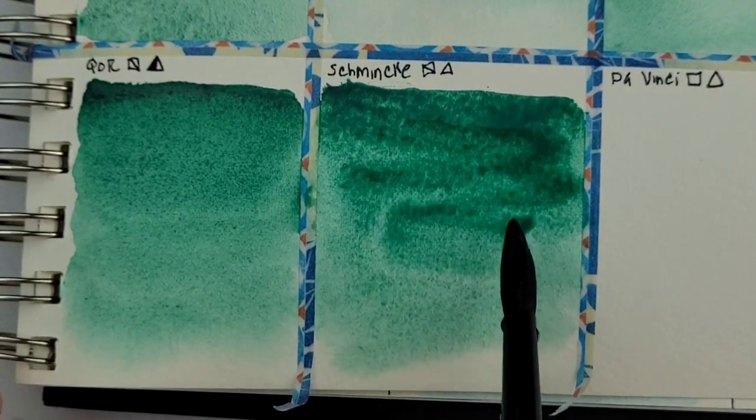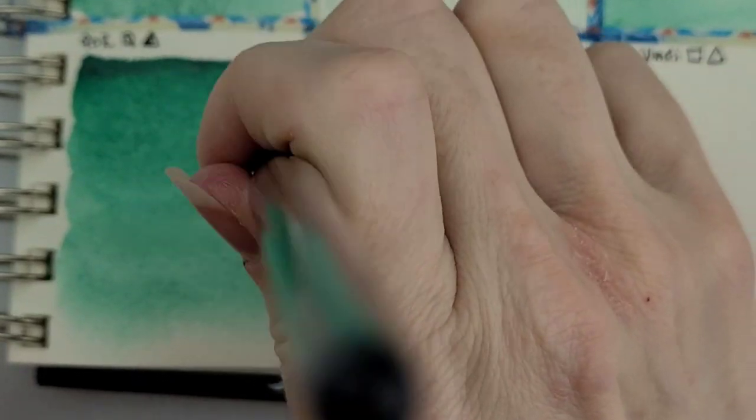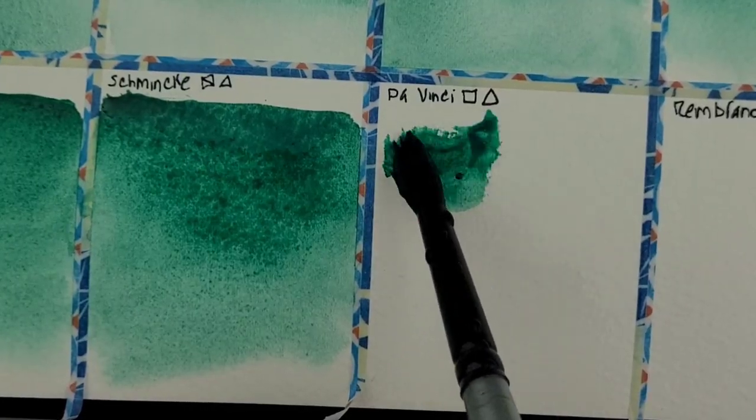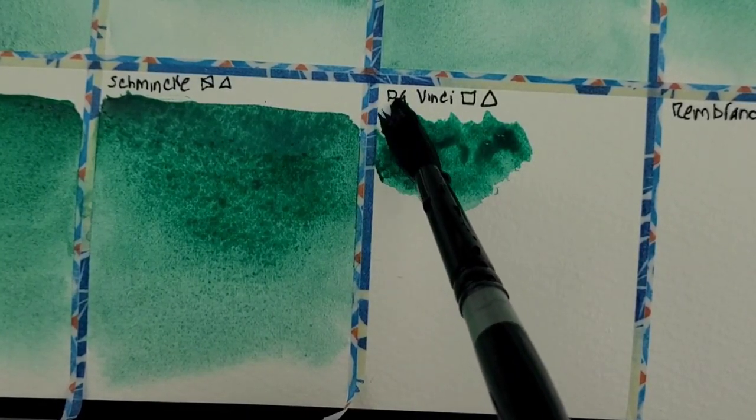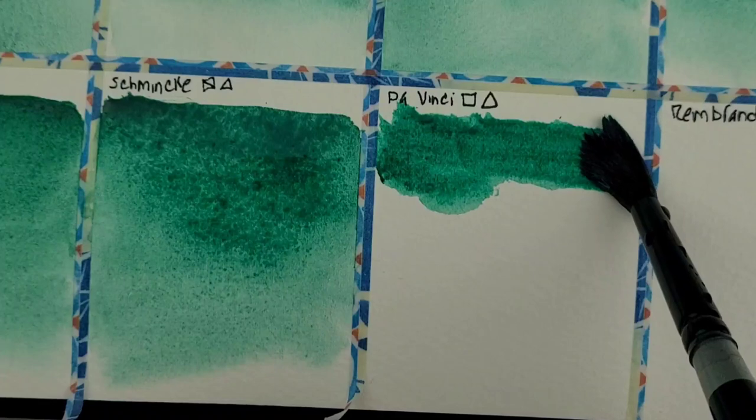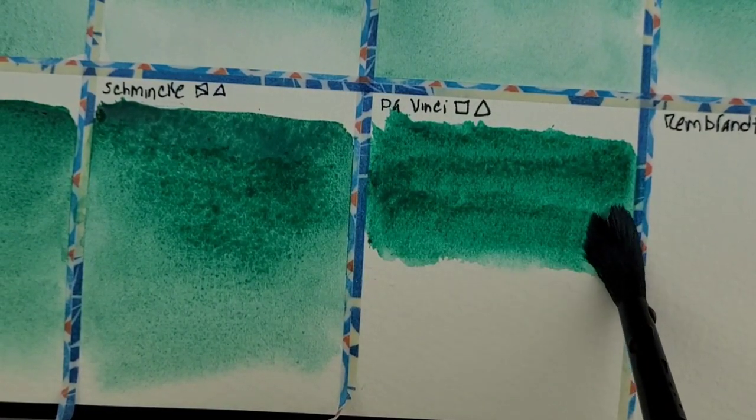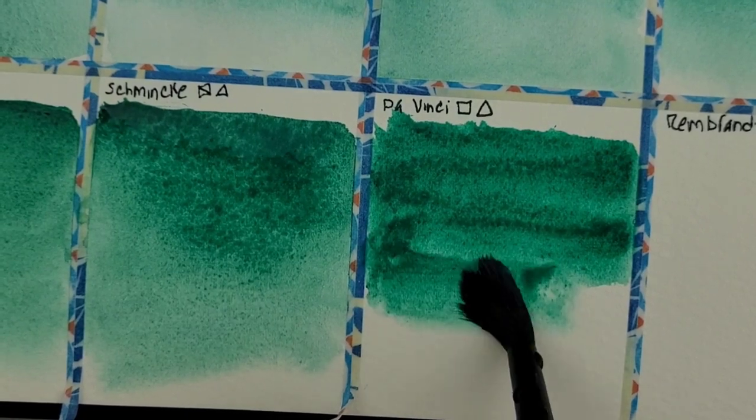And now we're looking at Schmincke. This one I had to go back to the tube for to get more when I did the glazing because there was so much binder. Da Vinci went down nicely. It's not as granulating as the others, but I was still happy with it.